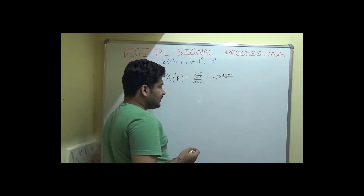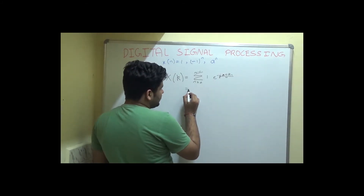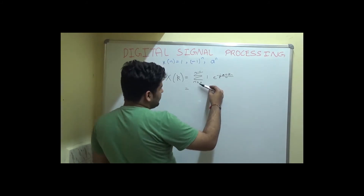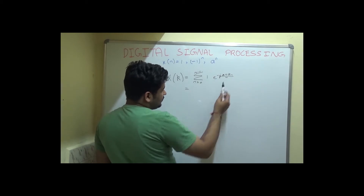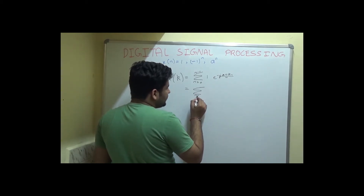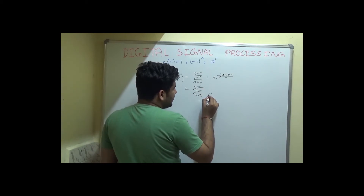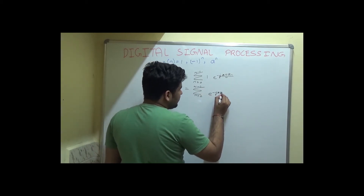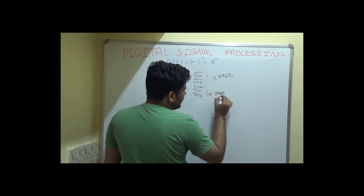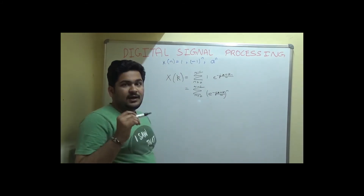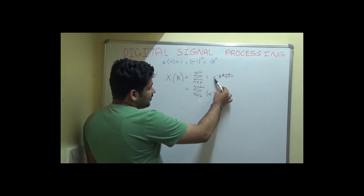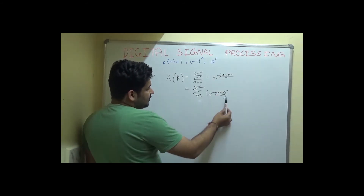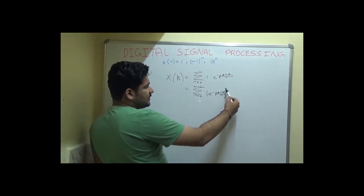How do I find this summation? It is very simple. I know that any summation ranging from 0 to N minus 1 of the form a raised to the power n can be expressed using the geometric series formula. I write the term as e raised to the power minus j 2 pi k divided by N, all raised to the power n, using the identity that a^m raised to the power n equals a^(mn).